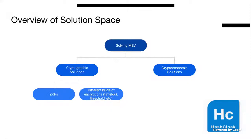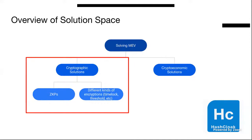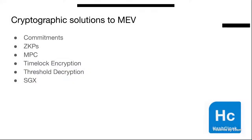A very short overview of the design space for solving MEV in general: there is the side of using math and economics for solving these problems, which was discussed earlier in the day. Today will be focused mainly on the cryptography side of things. There are quite a few different solutions that people have come up with over the past years to solve front-running and MEV in Ethereum. We'll briefly go over each solution, and as part of this being ongoing work, if you have any more suggestions or ways to combine these, just reach out.